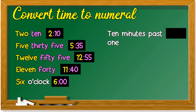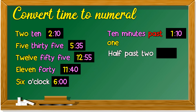'10 minutes past 1' — the minute is 10 minutes past, so the hour is 1. It's 1:10. 'Half past 2' — what is half? Half of the clock is at 6, and 6 times 5 is 30. The hour is 2, so it's 2:30.